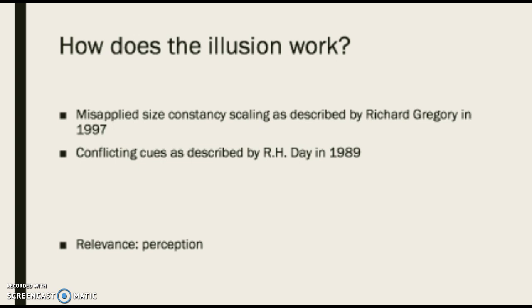Conflicting cues, as described by R.H. Day in 1989, says that the wings are perceived as being part of the overall size and shape of the line, which is why the line with the outward wings looks longer.